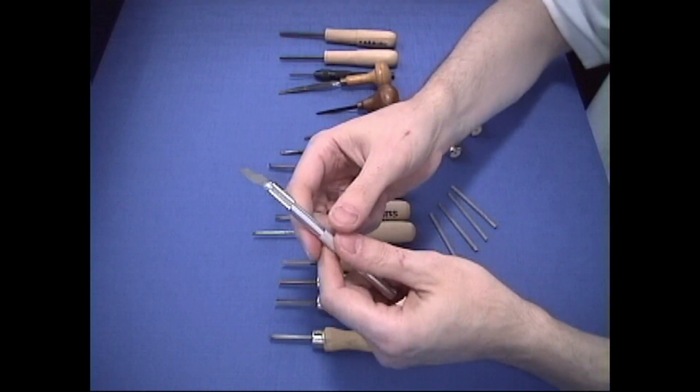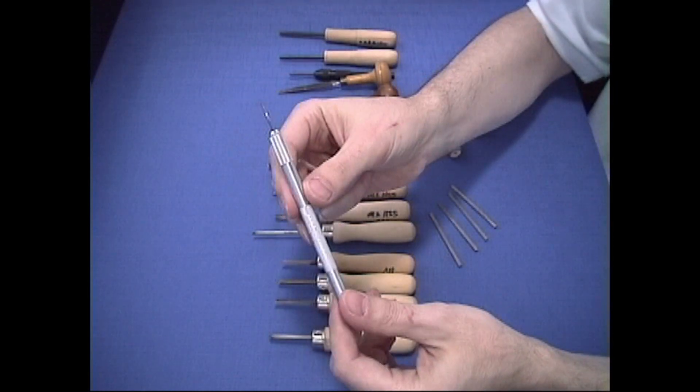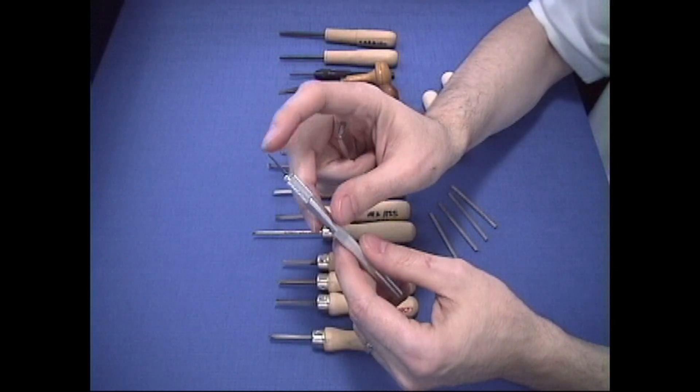What works better for me as far as a parting or slotting graver is to use a craft knife like this with a number 16 blade.